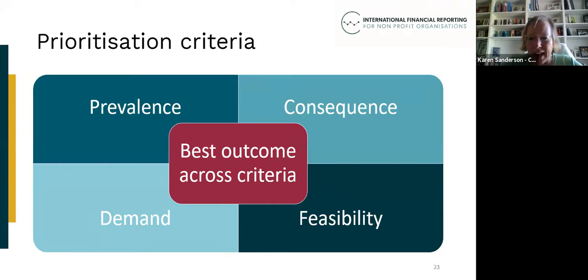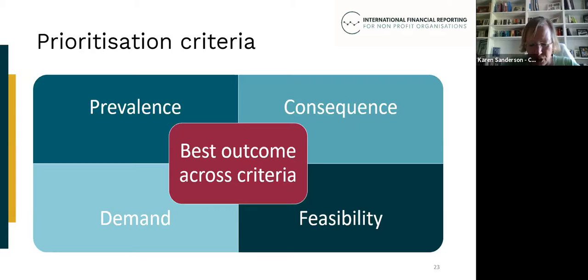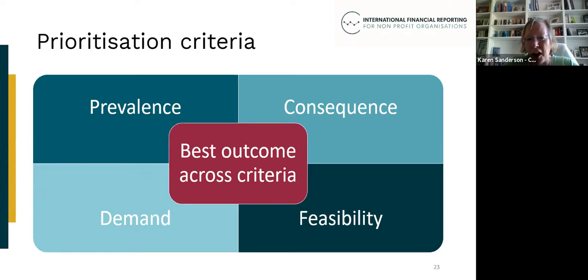The fourth criterion is feasibility — can we get to a technically sound solution within the time and resources available without adversely impacting the project? For example, we could spend all our time on one issue, but we might be better off addressing more issues. So that feasibility consideration is also important, and we prioritised those issues that rate most highly across all four criteria.